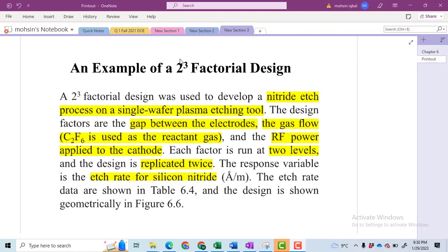Now we'll solve our problem based upon 2 raised to power 3 factorial design. Our 2³ factorial design was used to develop a nitrite etched process on a single wafer plasma etching tool. The design factors are: gap between the electrode (factor number one), the gas flow C2F6 used as a reactant gas (factor number two), and the RF power applied to the cathode (the third factor). Each factor is run at two levels, so it's a 2K factorial design. We have three factors, each at two levels.